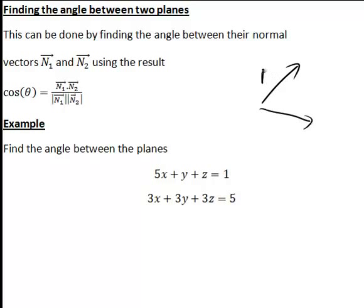If these are our vectors n1 and n2 here, then cosθ is equal to n1 dot n2, that is the scalar product of n1 and n2, divided by the magnitude of n1 times the magnitude of n2.